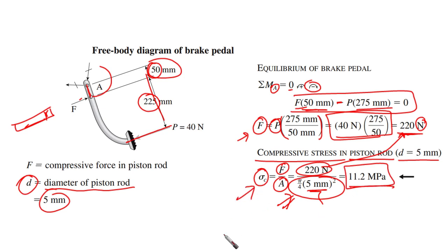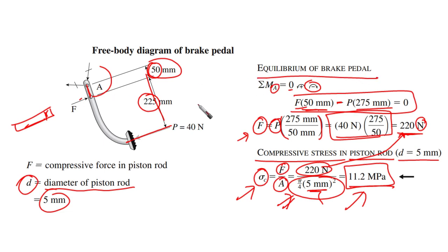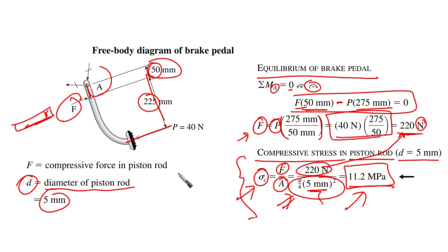The magnitude of this stress equals 11.2 megapascal. To summarize: we applied a simple equilibrium equation to the brake pedal, obtained the compressive force F from the moment equation, and from that force we calculated the compressive stress sigma_c in the piston rod. This is the end of this example.